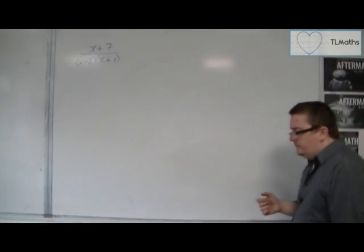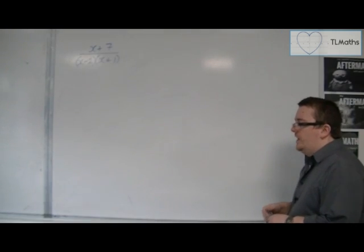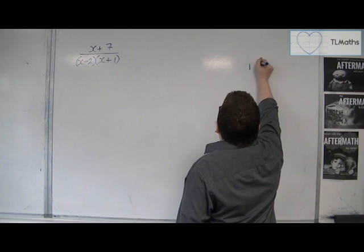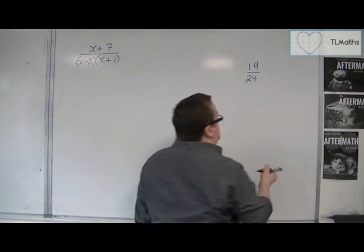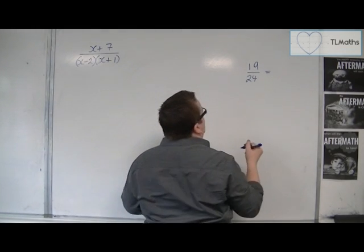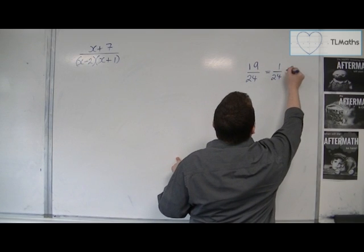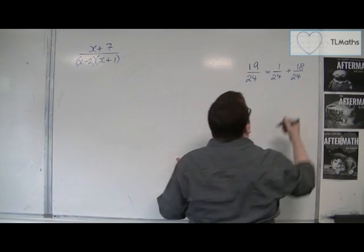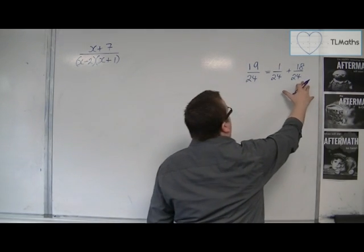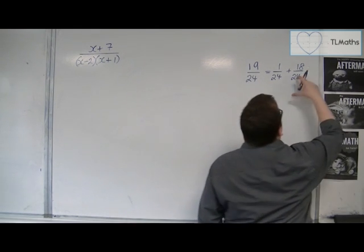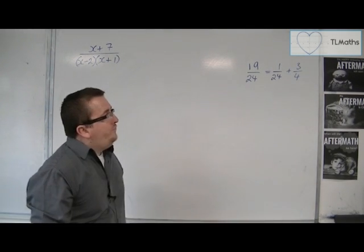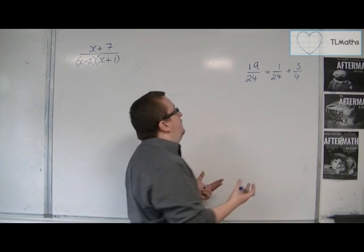This is a process known as partial fractions. So we're going to be splitting a perfectly good fraction up into two or more pieces, which will enable us to do integration with it or solve a number of other problems as well. So that is the reason why we're going about this. Now, how do we do it? That's the next question.